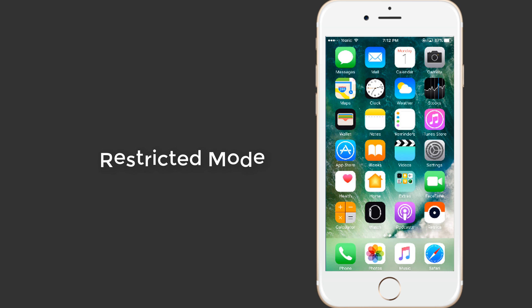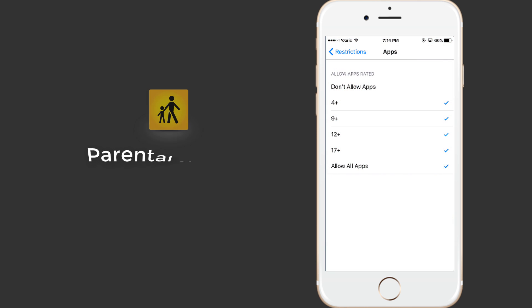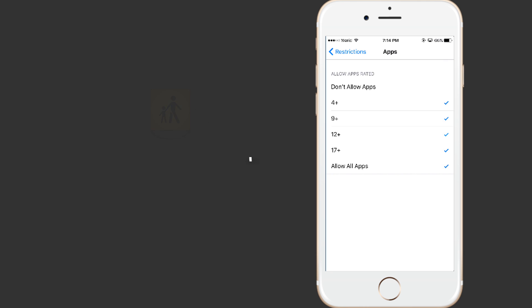The first and the best way to hide apps on iPhone is through iPhone restriction features. The restrictions feature is basically aimed at users looking for parental control. However, you can also use this feature to hide apps.